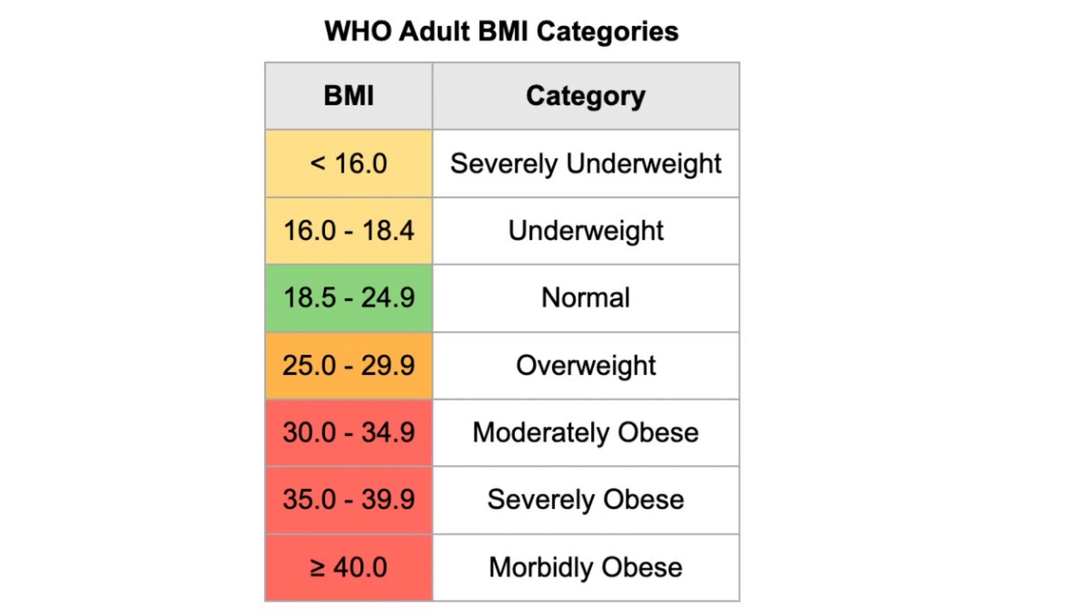And if the values are 18.5 to 24.9, the person has approximately normal weight according to height. If the ratio is 25 to 29.9, he is overweight.